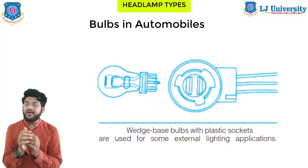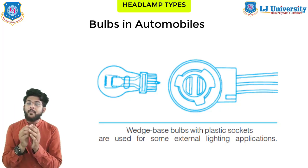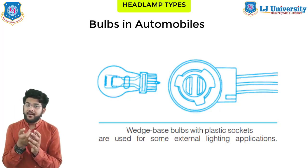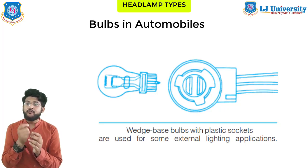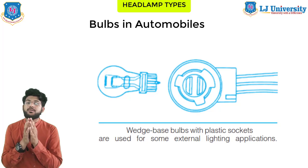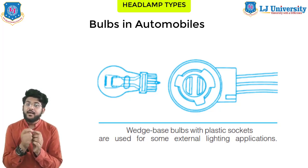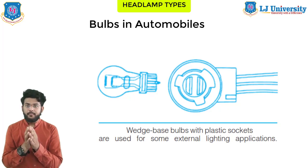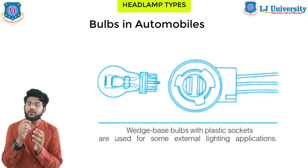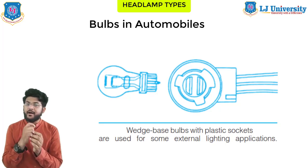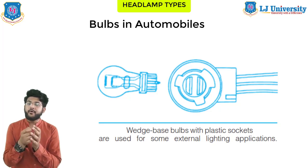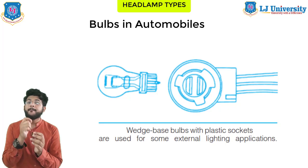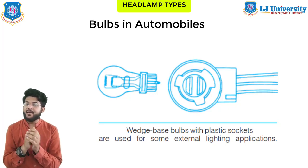Next are wedge base bulbs. Wedge base bulbs have generally been used in instrument cluster and other interior lighting applications. The bulb and the optical part are actually one piece — a formed glass shell with filament wire extending through the base and crimped around it to form the external contacts. This design locates the contacts accurately, permitting direct electrical contact with the socket, which contains shoulders to hold the bulb in place. The bulb is installed by pushing it straight into the socket with no indexing required. Wedge base bulbs with new socket designs were introduced in 1987 as a replacement for brass base bulbs for exterior lighting applications.